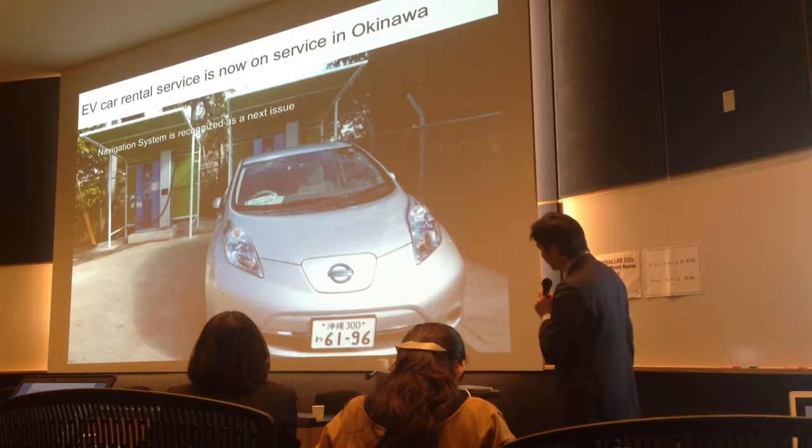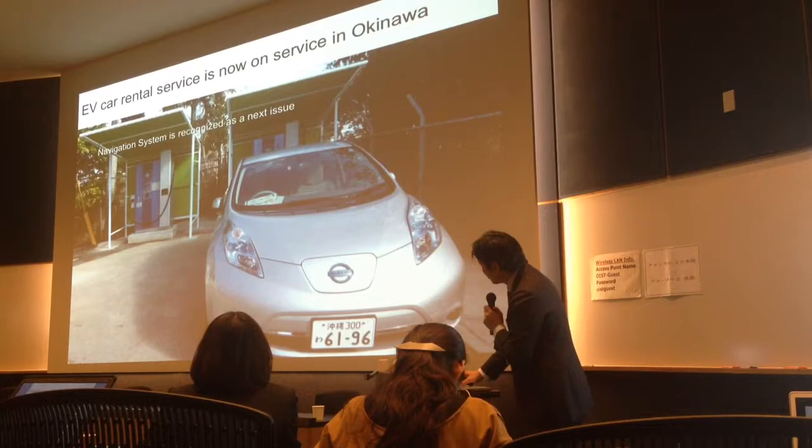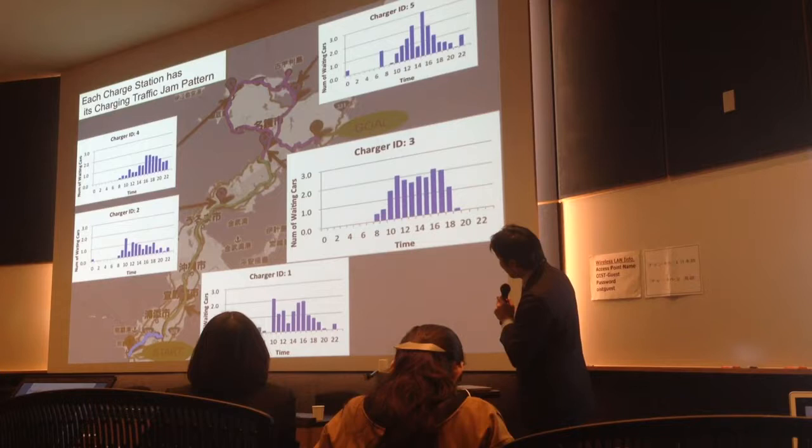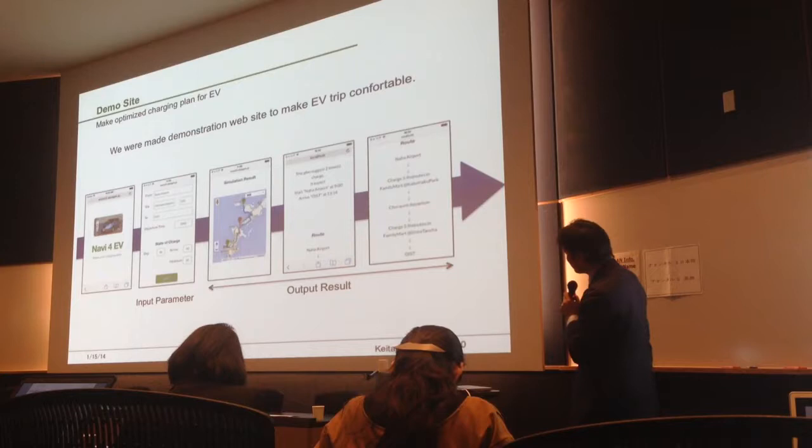On the right side is the existing arrangement of quick chargers as of February 2011. The drive range is calculated based on 20-minute drives, but it fluctuates significantly, which is very confusing. So we started to provide a real navigator system, also taking into account charging congestion at some locations.